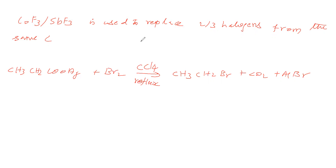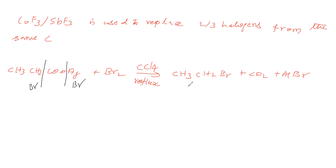Here is how the reaction takes place: Bromine breaks — one Br to the alkyl part, giving CH3CH2Br, then CO2 is released, and AgBr is also formed. In this method we are preparing Bromoalkanes.